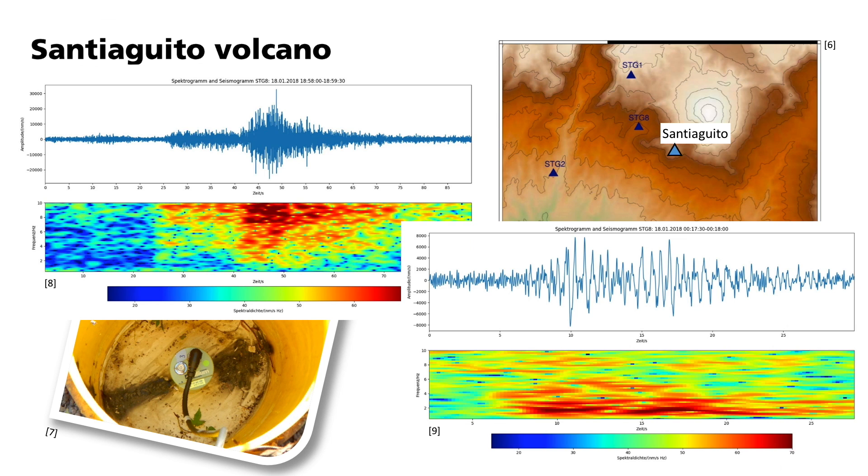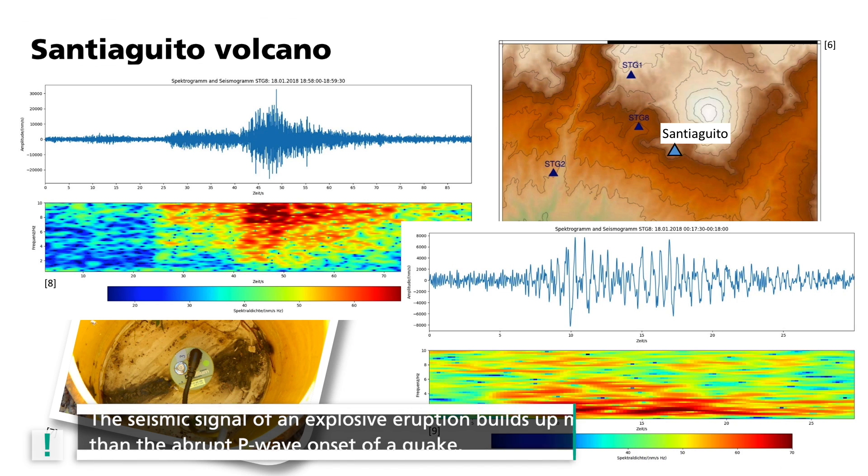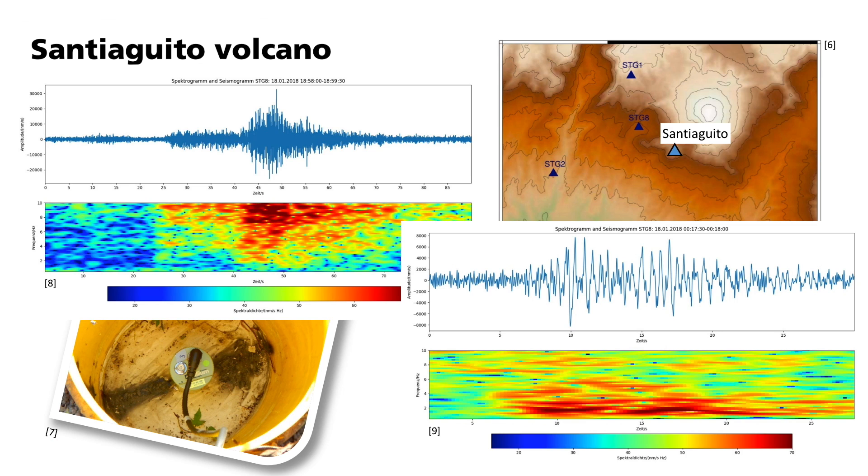For comparison, here is the record of an explosive eruption of Santiaguito. First, note that both the amplitude and time scales have changed. The eruption signal is significantly shorter and weaker here than the earthquake I just showed you. In the spectrogram, it can be seen that the seismic signal of an explosive eruption builds up more slowly than the abrupt P wave onset of a quake. As a result, the initial onset is less clear. The excited frequency range of 1 to 5 Hz is considerably narrower.